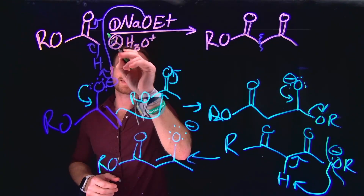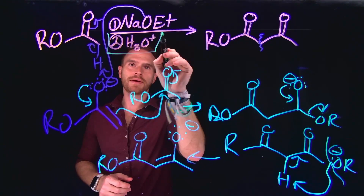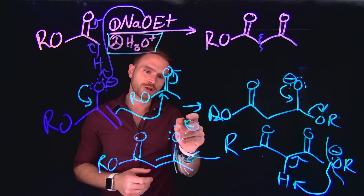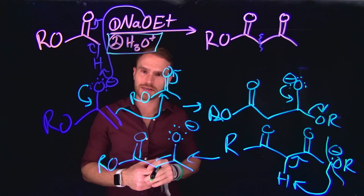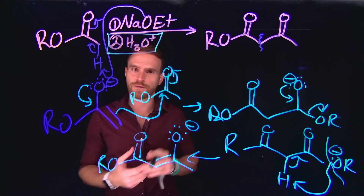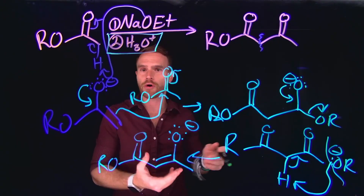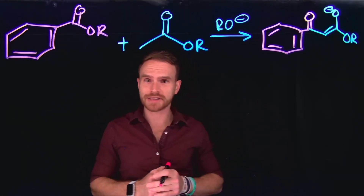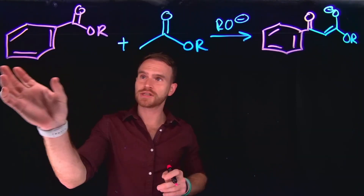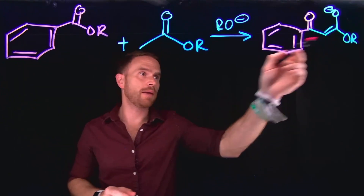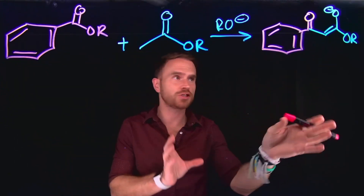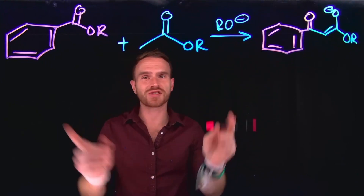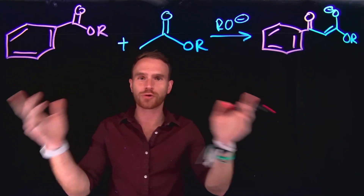From here, we can undergo a tautomerization where we can reform our enol, or potentially our beta ketone. The second step in all of these Claisen condensations is going to be an acidic workup, which will allow us to protonate this species in order to form either our beta ketone or our enol. Importantly, we can do what are called cross Claisen condensations, using two different esters to form a brand new species which contains two different chains on each side. So this is a cross Claisen, because the esters are different.